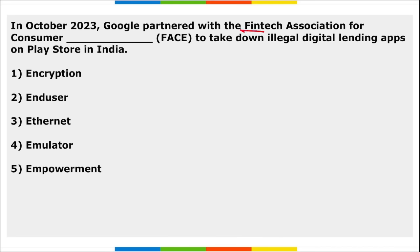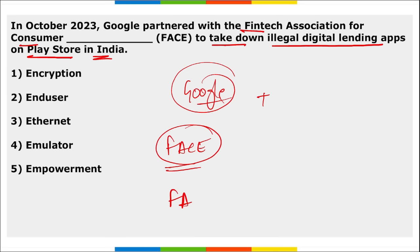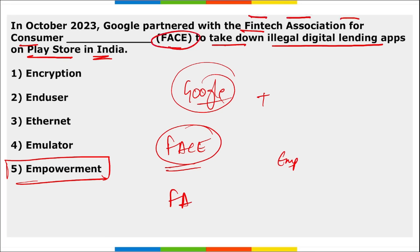Next, Google partnered with FACE — Fintech Association for Consumer Empowerment — to take down illegal digital lending applications on the Play Store in India. Google launched this platform called FACE, which stands for Fintech Association for Consumer Empowerment, in order to remove all illegal digital lending applications from the Play Store in India.